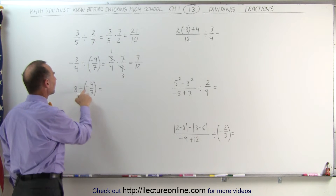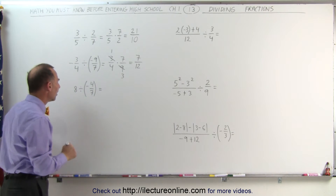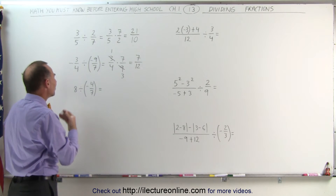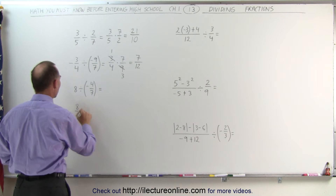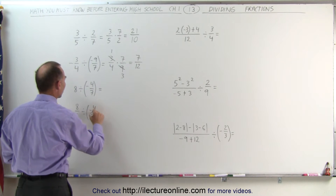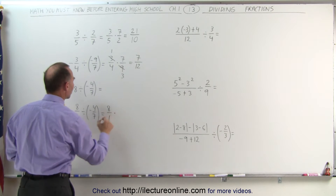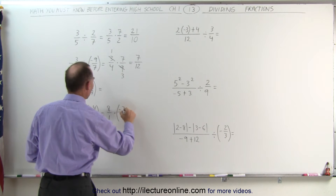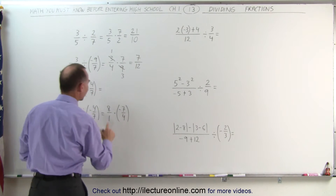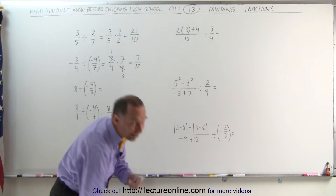Here we have 8 divided by negative 4 sevenths. We already know the answer is going to be negative. But what do we do with the 8? The 8 is like 8 divided by 1. So this can be written as 8 divided by 1, divided by negative 4 over 7. This equals 8 divided by 1, multiplied by the inverse, which is negative 7 over 4. We can write this as 8 times negative 7, or negative 56, divided by 1 times 4.